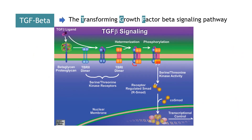Here you have the receptors, and they work in a specific way — these receptors are dimers. They need to fuse to allow the signal to come in. Here you find the SMAD proteins, which are very important to produce the change in regulation. Let me show you the video in the following slide.